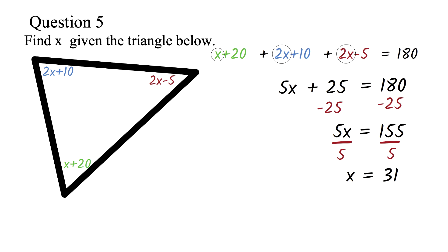We could have been asked to find the actual angles. In this case, we would replace the x in each of the angles with 31. So for the angle x plus 20, we will have 31 plus 20 to get 51 degrees here. For the angle 2x plus 10, we will have 2 times 31 plus 10. This will be 72 degrees.